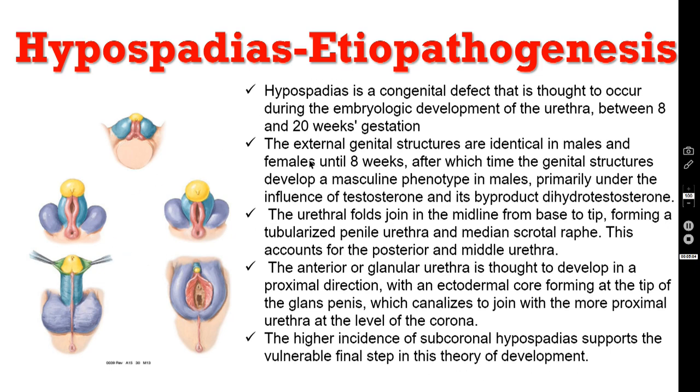The anterior or glanular urethra is thought to develop in a proximal direction, with an ectodermal core forming at the tip of the glans penis, which canalizes to join with the more proximal urethra at the level of the corona. The higher incidence of subcoronal hypospadias supports this vulnerable final step in the theory of development.